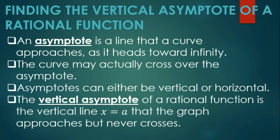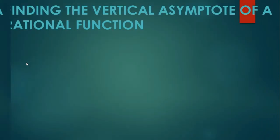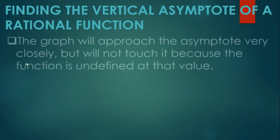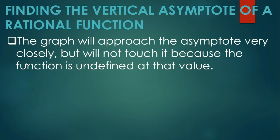The vertical asymptote of a rational function is the vertical line x is equal to a that the graph approaches but never crosses. The graph will approach the asymptote very closely but will not touch it because the function is undefined at that value. From the term undefined, I guess may idea na kayo on how to obtain the vertical asymptote.